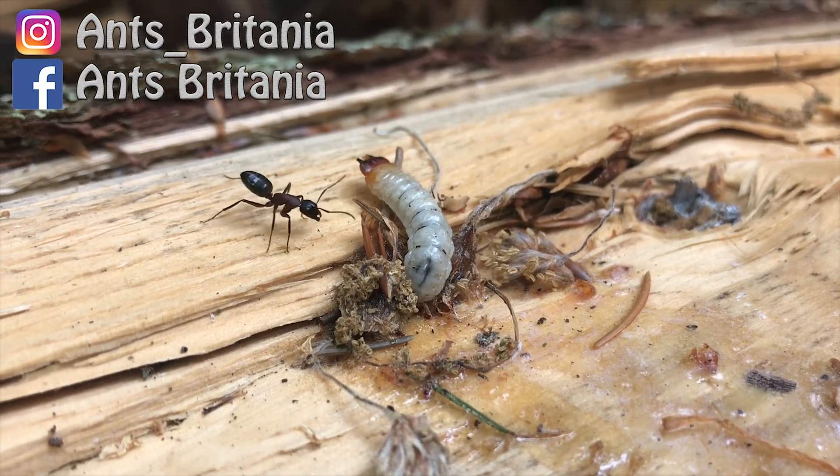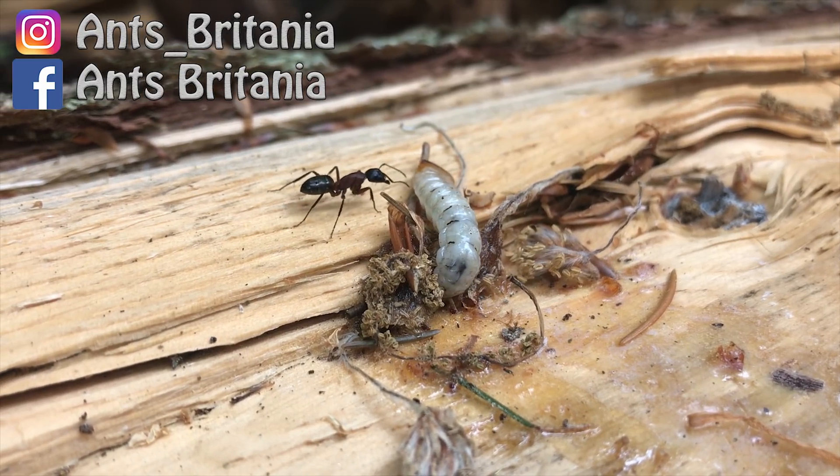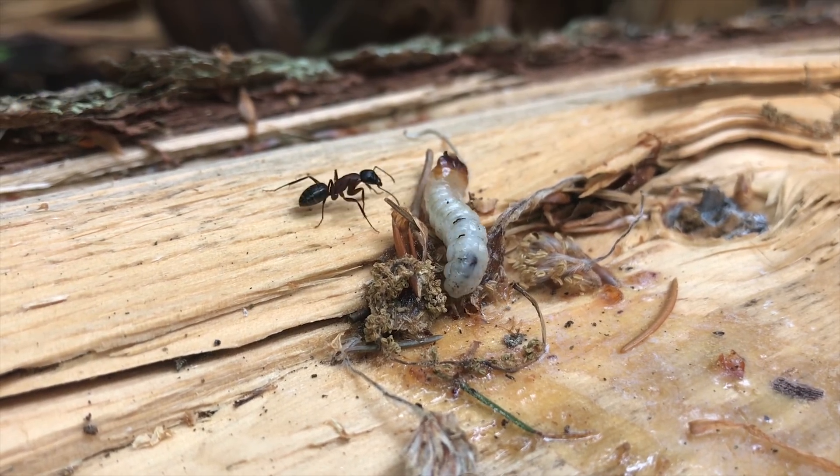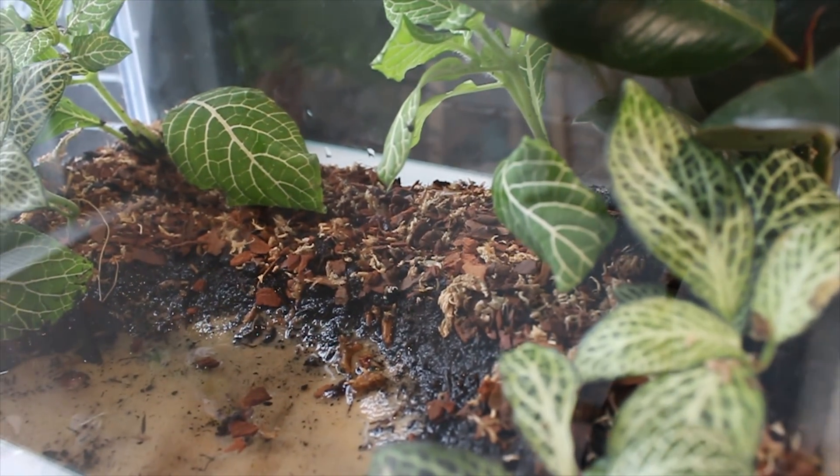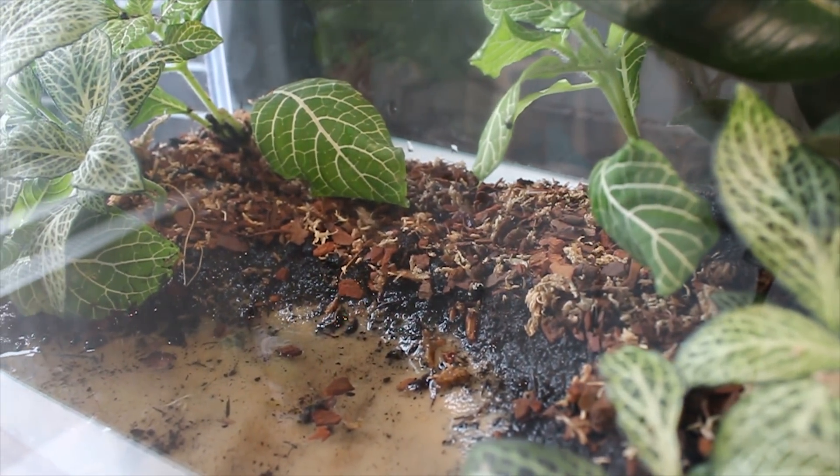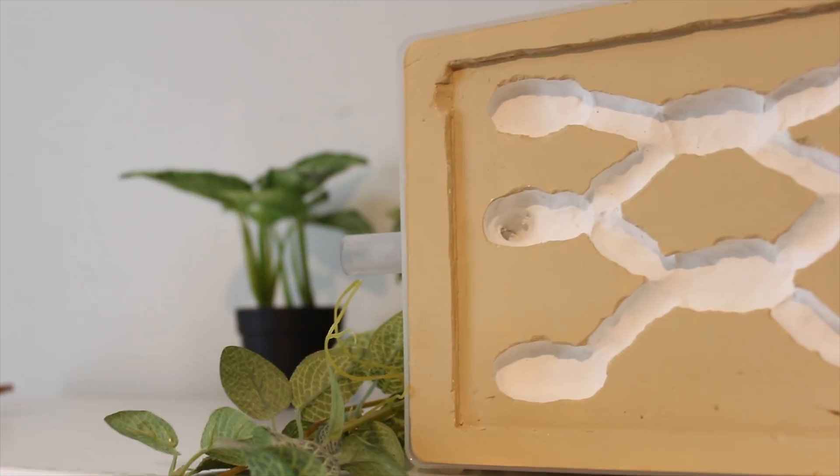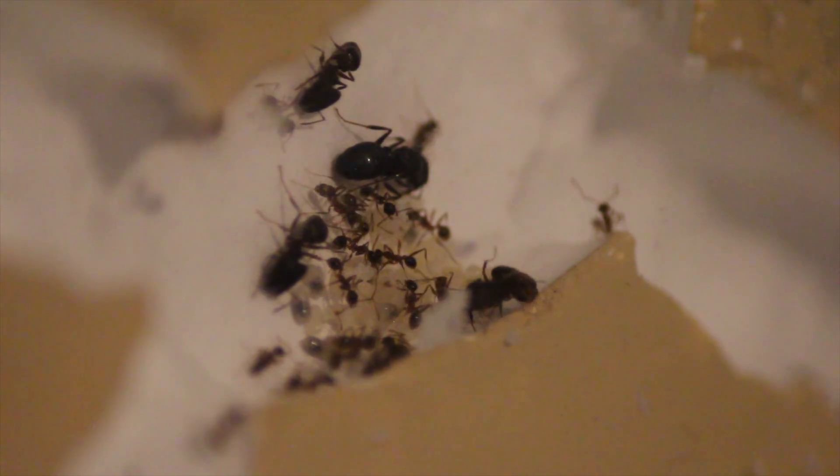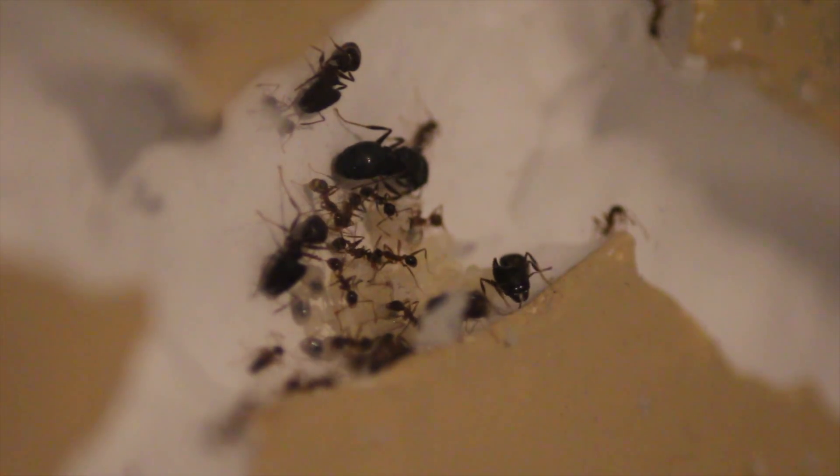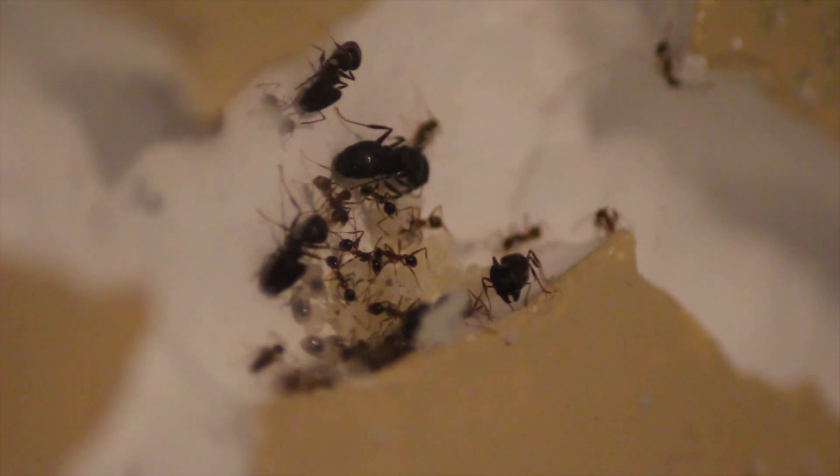Today we're going to be continuing our Ant Farm building series. In our previous videos we have seen the creation of a tropical formicarium which actually ended up housing our amazing jumping ants. We also showcased a tutorial on how to build a plaster formicarium. This is now called home by our new big headed ant colony.